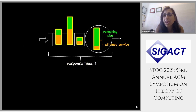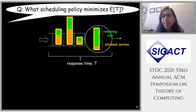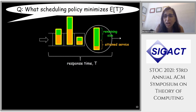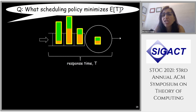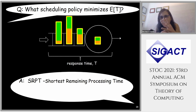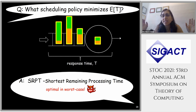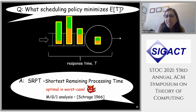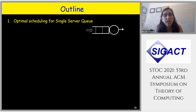Within this setting, what scheduling policy minimizes mean response time? You want to order jobs with the smallest remaining processing time first — favoring jobs that will finish quickly. This policy, SRPT (Shortest Remaining Processing Time), is optimal in the worst case and also optimal stochastically. It was first analyzed for an MG1 in 1966. So for our single-server warmup: run SRPT.